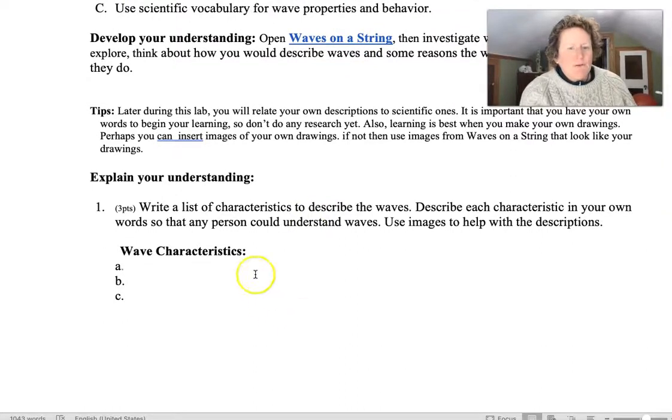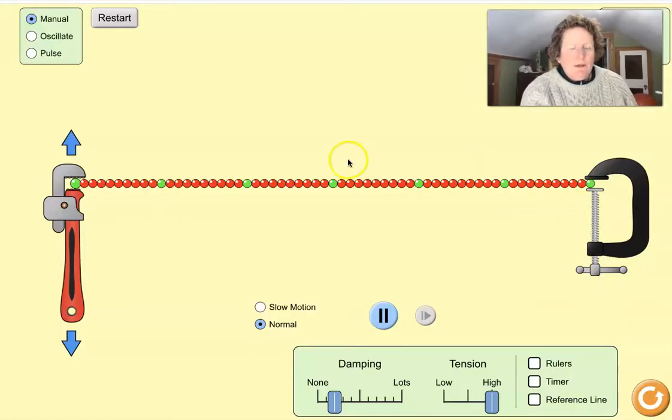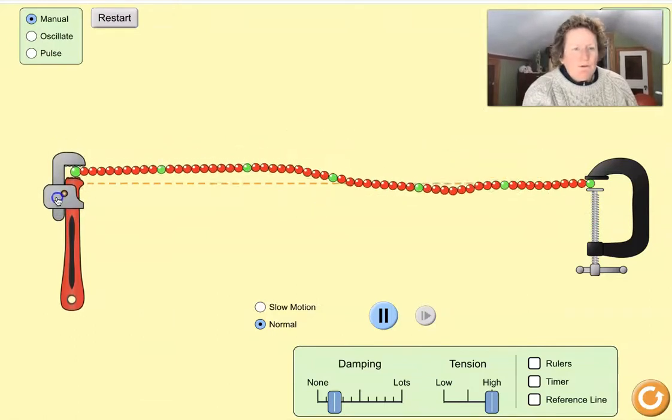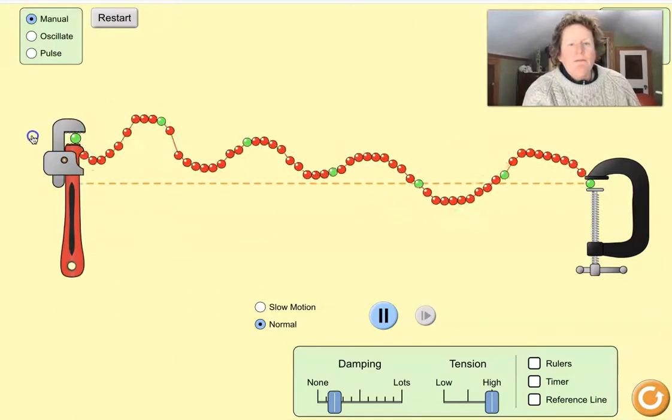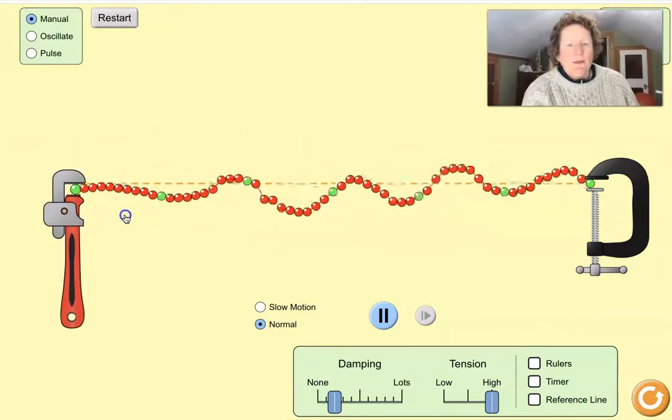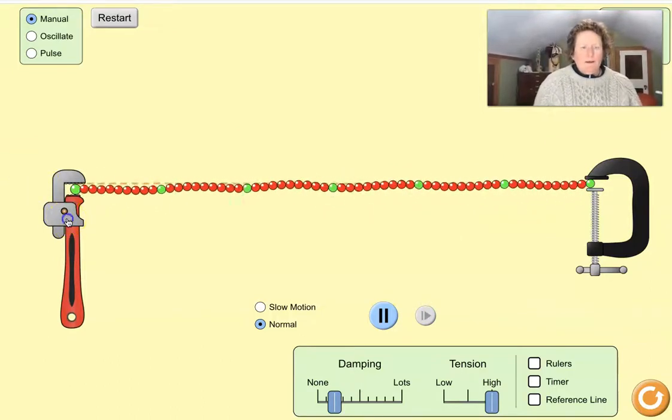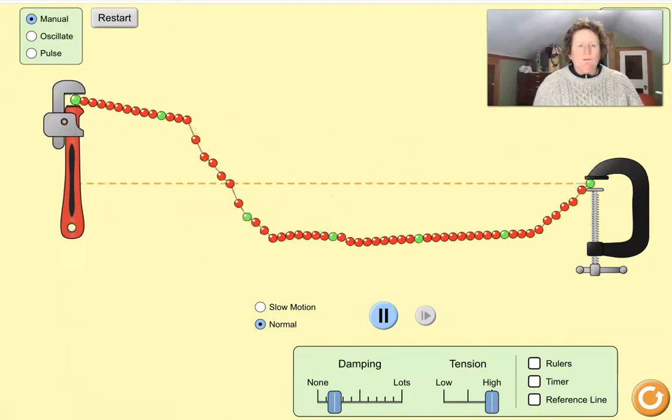The first question asks you to explain your understanding. So it's your job to visit the simulation and just kind of mess around. There's lots of things you can do with the manual mode. You can see how quickly you can make waves. You can see the size of the waves you can make.